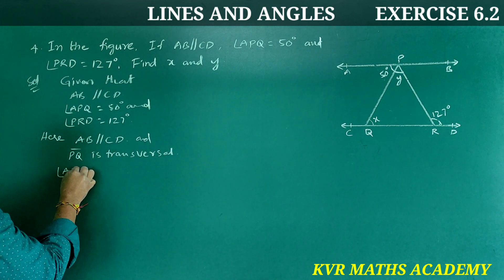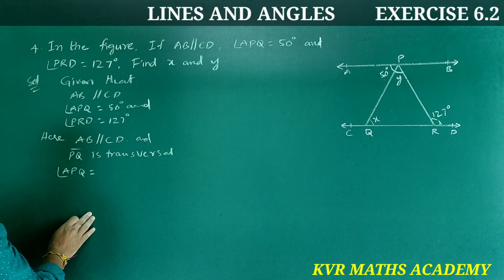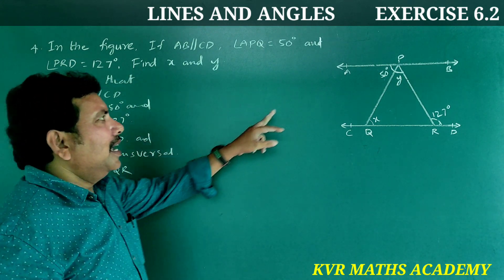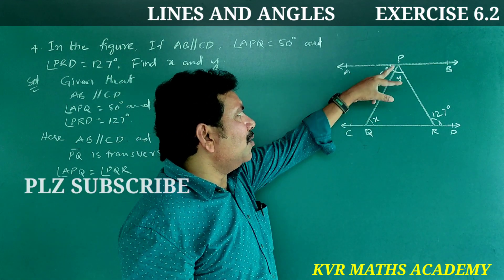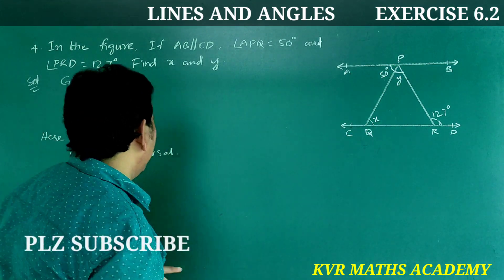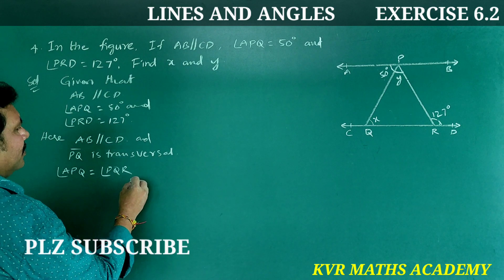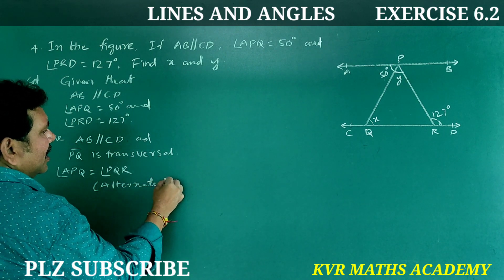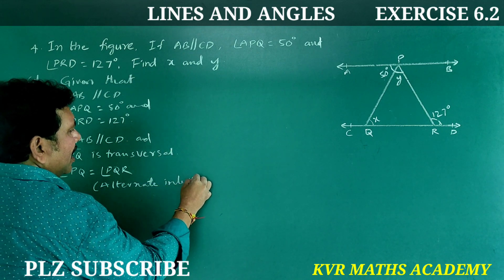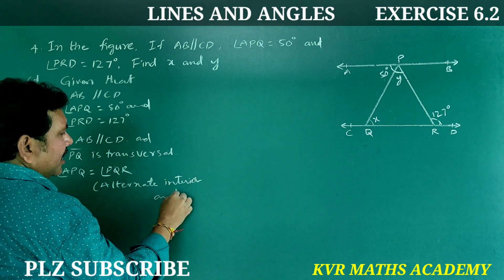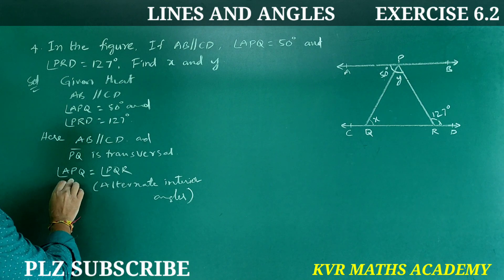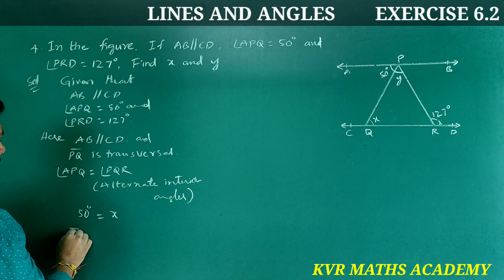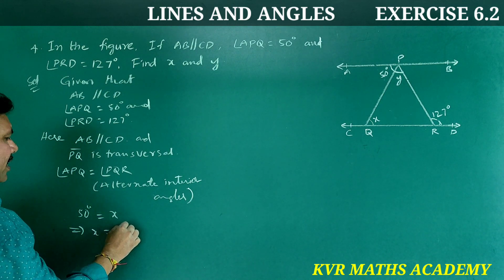Here, AB is parallel to CD and PQ is the transversal. Angle APQ is equal to angle PQR — these are alternate interior angles. So angle APQ = 50 degrees is equal to angle PQR = X. Therefore X is equal to 50 degrees.